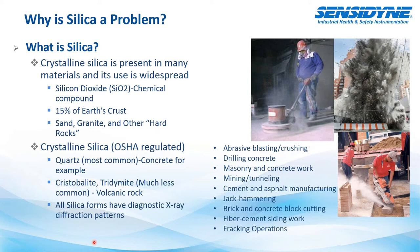In OSHA's terms, they regulate three different types of silica. You'll see it mostly as quartz — that's the most common, found in concrete. The other two types noted by OSHA are cristobalite and tridymite. These are less common but are still seen in quite a few minerals on the market, generally evolving from volcanic rock activities. All forms of silica have different X-ray diffraction analysis patterns.